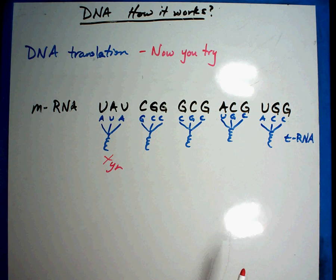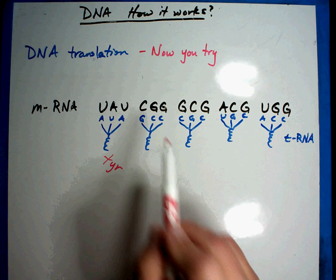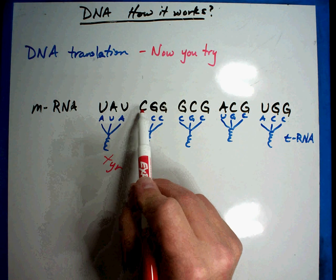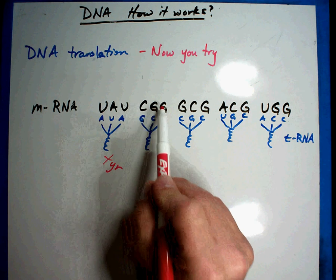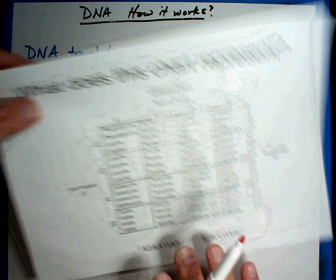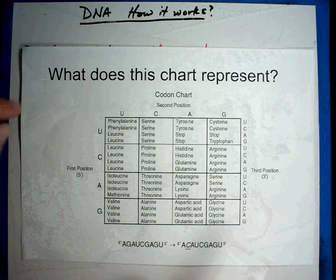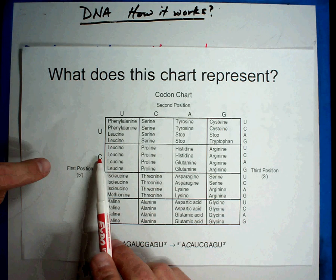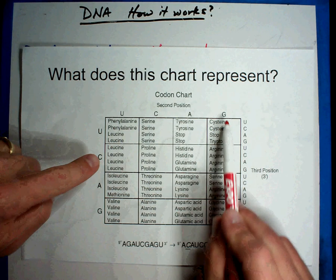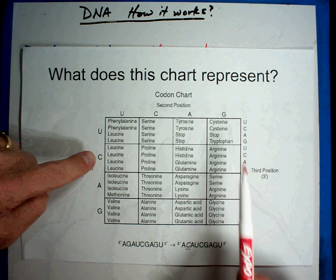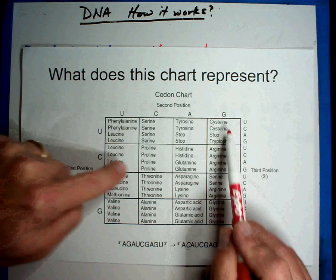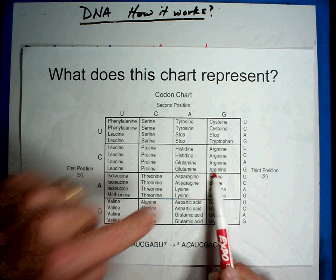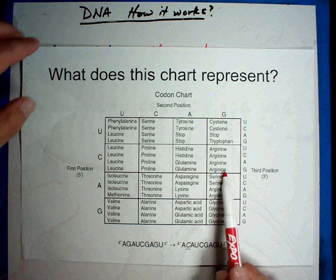Next one: C, G, G. C, G, and G is the bottom one in the box. CGG — arginine is the next one. ARG.